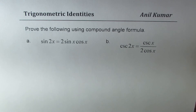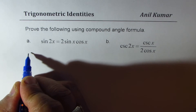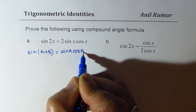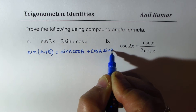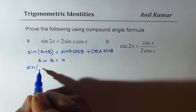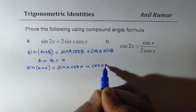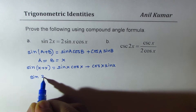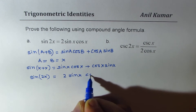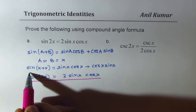Let's begin with the very first one. We want to find what is sine 2x. Using the formula sine(A + B) = sine A cos B + cos A sine B, if we let A = B = x, we get sine(x + x) = sine x cos x + cos x sine x. Since x + x = 2x, we get sine 2x = 2 sine x cos x. This identity is used many times to prove other identities.